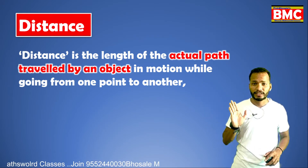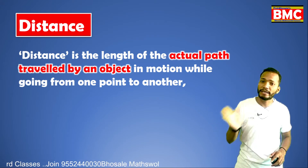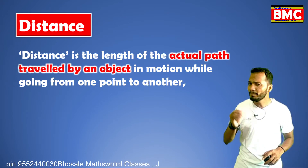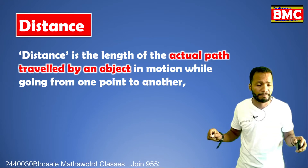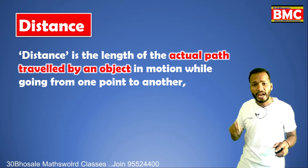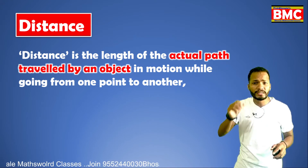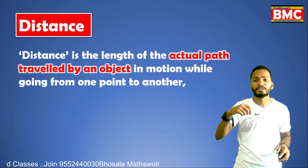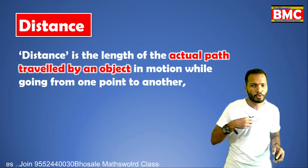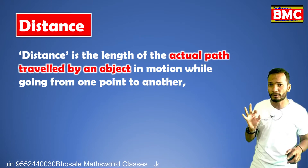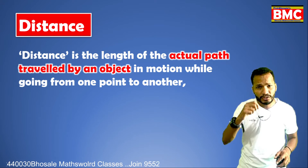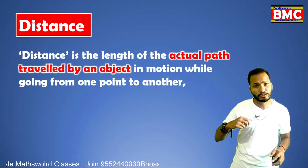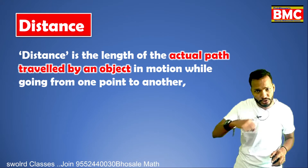Distance is the length of the actual path traveled by an object in motion going from one point to another point. So distance is the actual length of the path — the actual path that an object travels — from the starting point to the ending point.